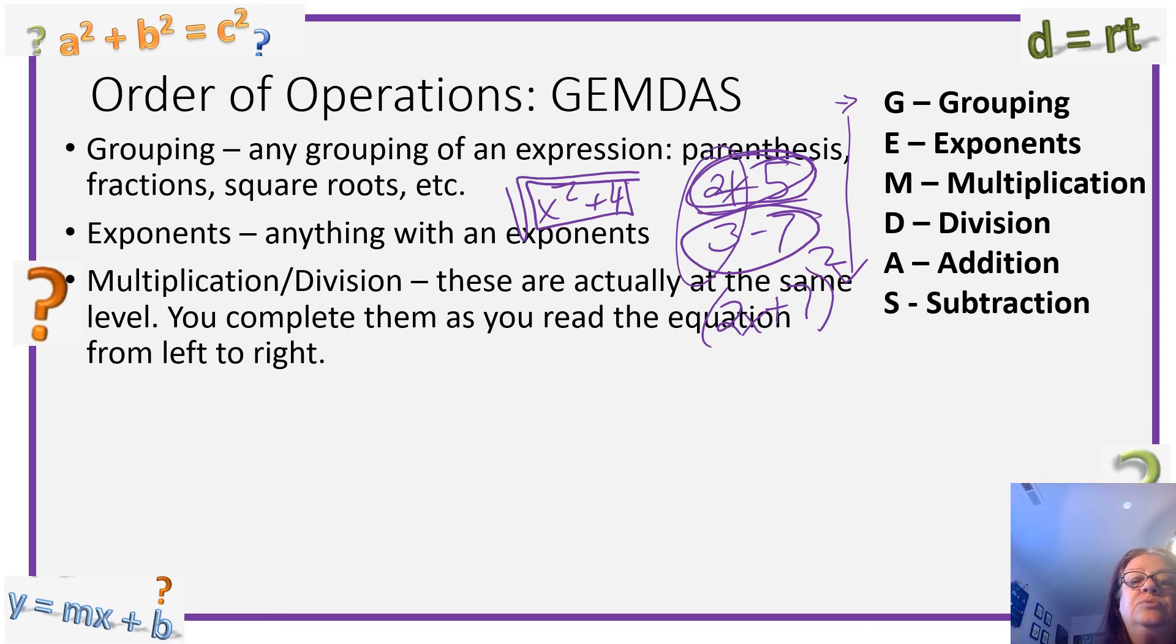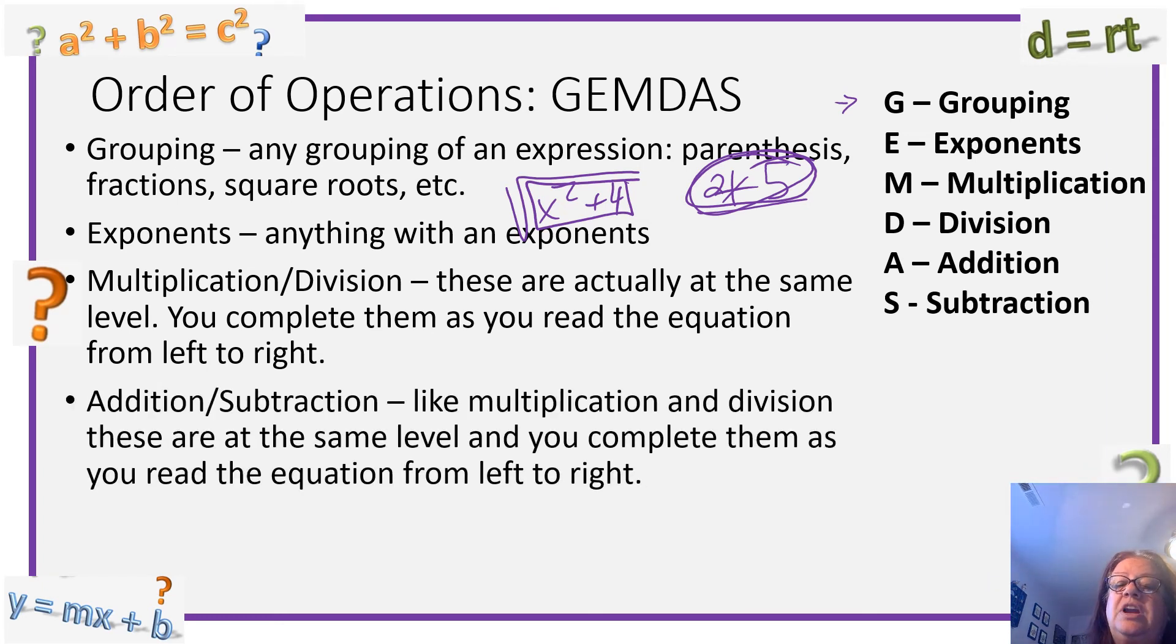Multiplication and division. These are actually the same level. You complete them as you read the equation from left to right. Addition and subtraction like multiplication and division are actually at the same level as each other. So you'll go through and do all your multiplications and divisions in a left to right manner. Then you'll go through and do all your addition and subtractions in a left to right manner.